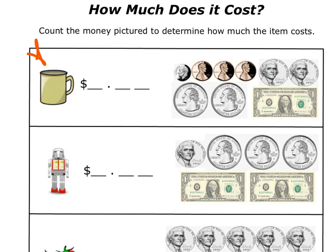How about a coffee cup? Count up that money amount and write it. Right away I see the one dollar bill. I see fifty cents, then sixty, then ten more — seventy. Seventy-one, seventy-two, seventy-three. So I have one dollar and seventy-three cents.